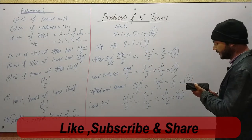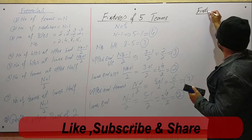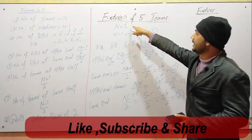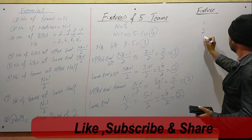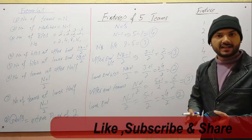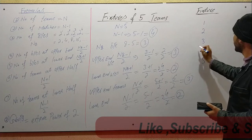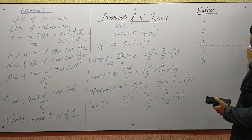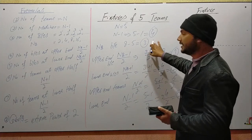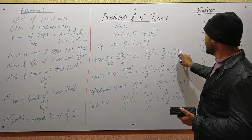Now let's draw the fixture and show how it works. First of all, we write the number of teams — 5. So we write positions 1, 2, 3, 4, 5. Now let's see the teams in the upper end and lower end. We have 3 teams in the upper end and 2 teams in the lower end. Where the upper end finishes, we will make a dotted line.